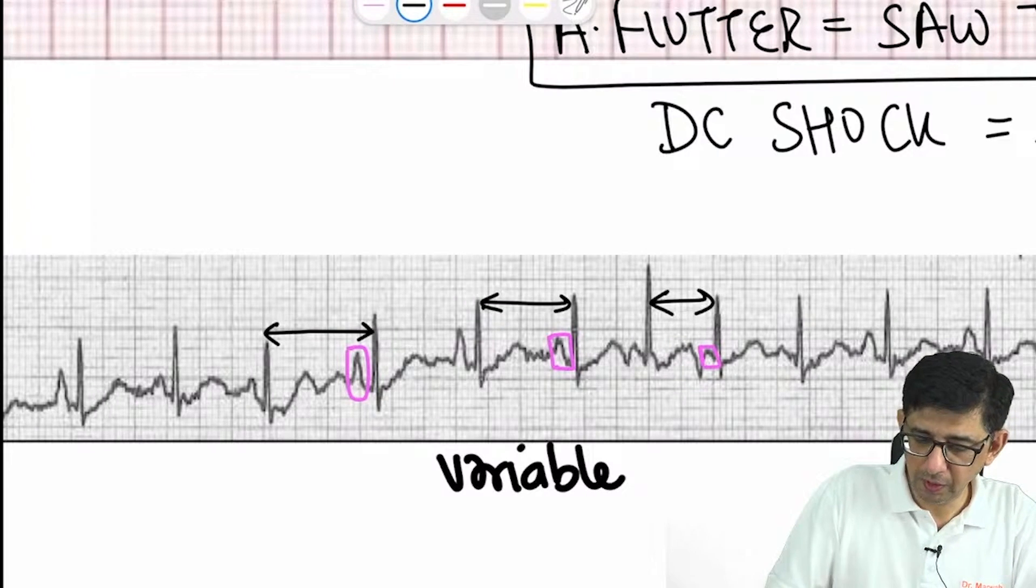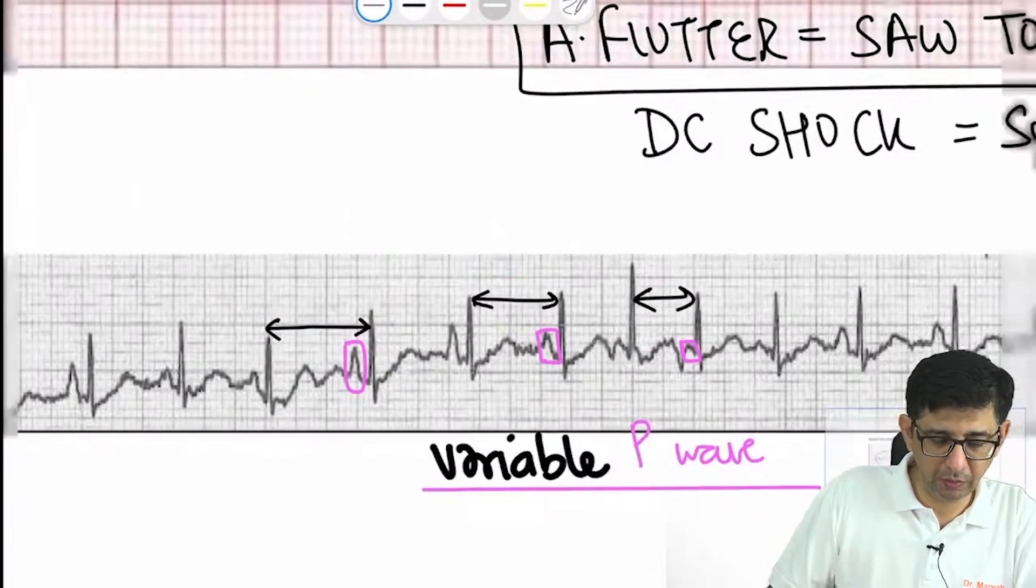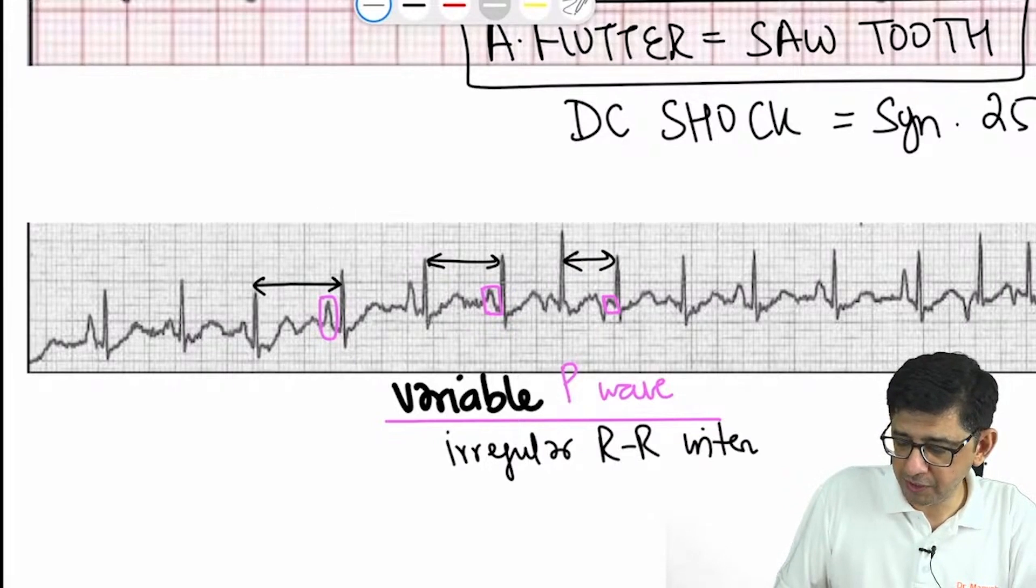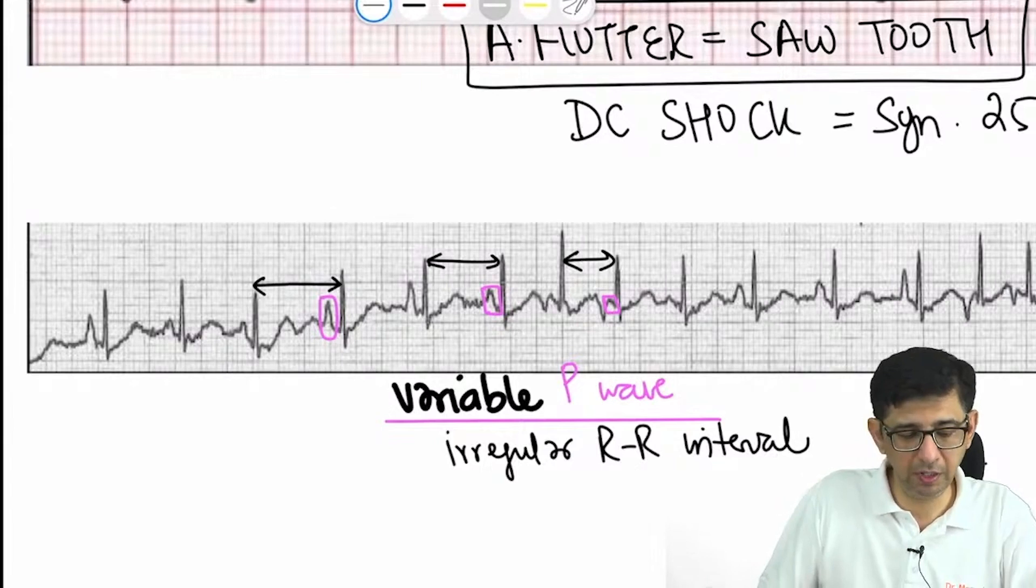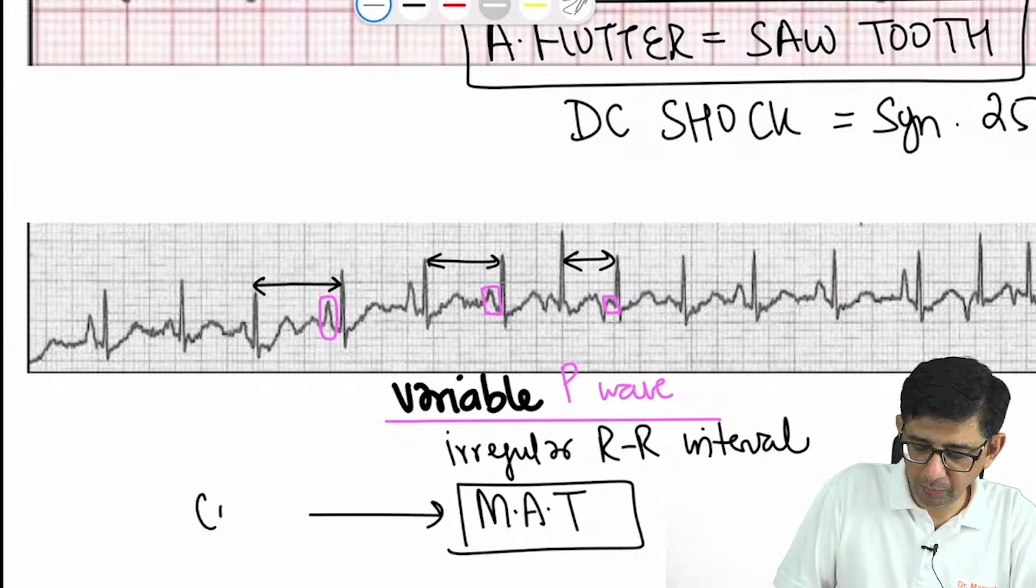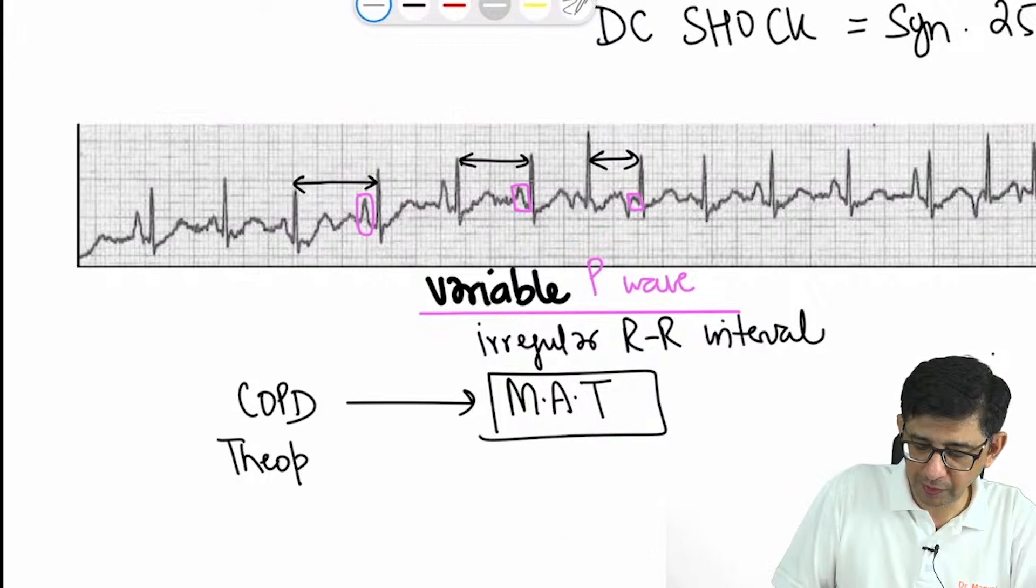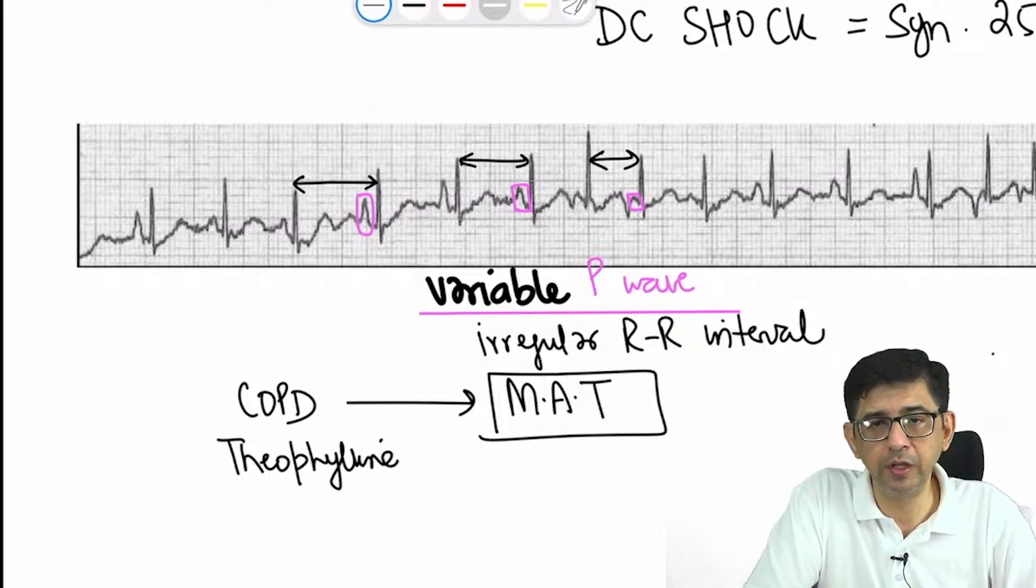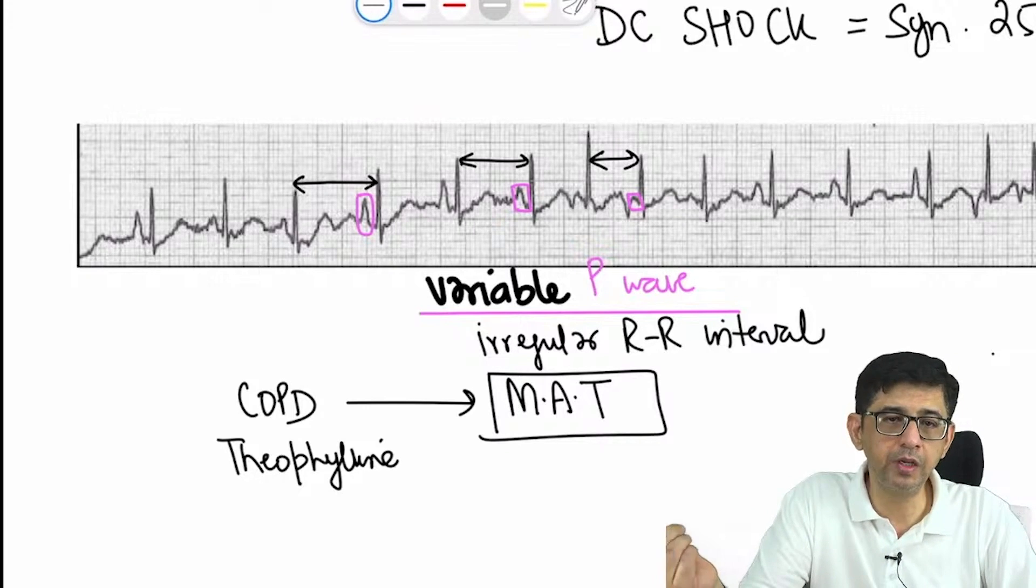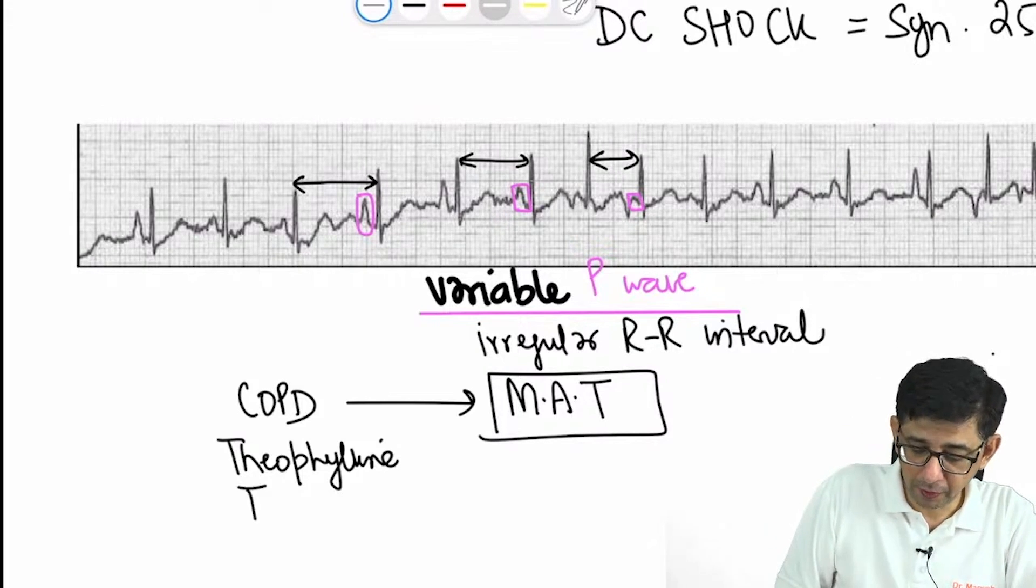The keyword is variable P wave height. Because of variable P wave height and irregular RR interval, this cannot be answered as atrial fibrillation because in A-fib there should be absent P wave. Here P waves are present but have variable amplitude. The answer is MAT, multifocal atrial tachycardia. This is commonly seen in COPD patients. The question will begin saying COPD or this COPD patient is taking too much theophylline. Because of dust storms, many COPD patients suffer and might take too much theophylline. That theophylline toxicity is the trigger for development of multifocal atrial tachycardia.